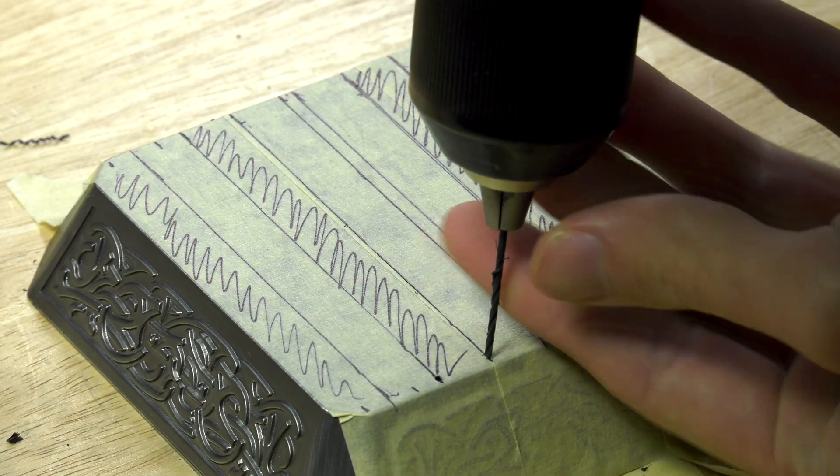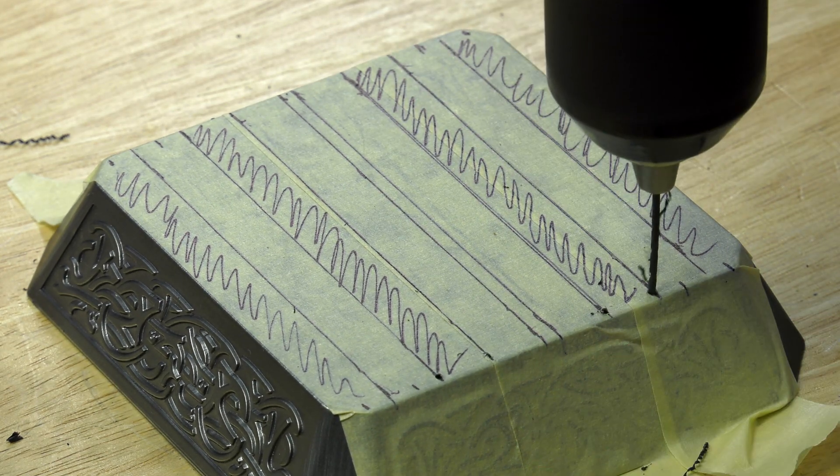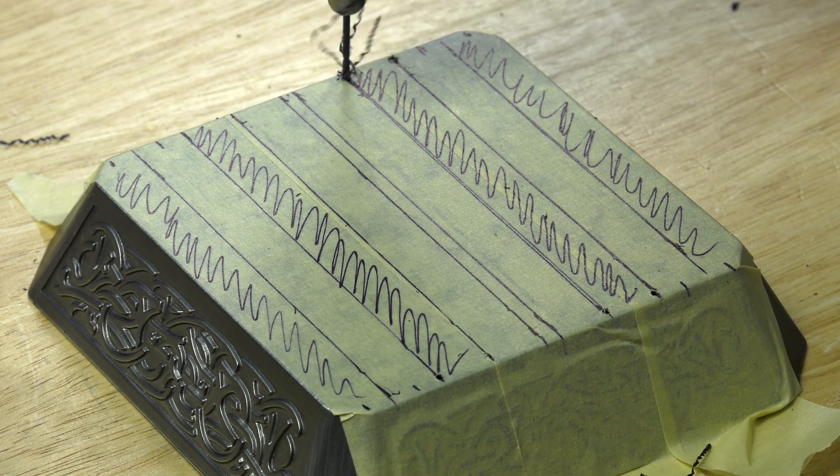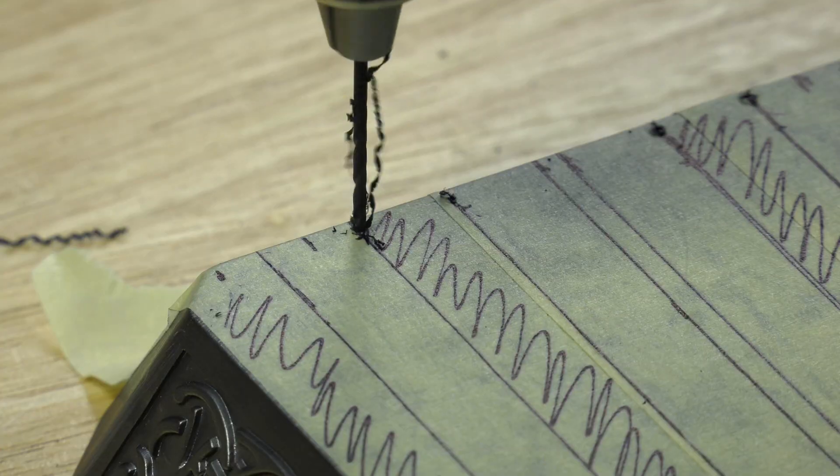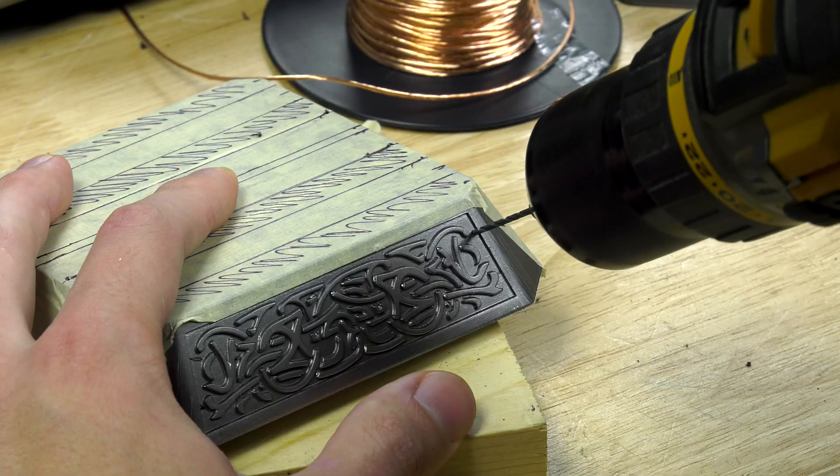So when I went to Home Depot they only had stranded copper wire, so what I ended up doing was soldering the ends of the copper wire together so that way when I tried feeding them through these little holes it didn't grab the ends of the wire like the strands and pulled apart.